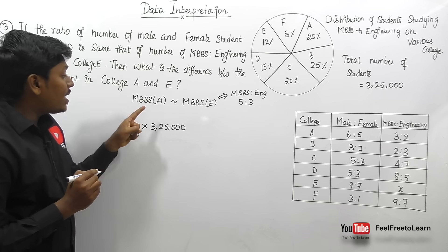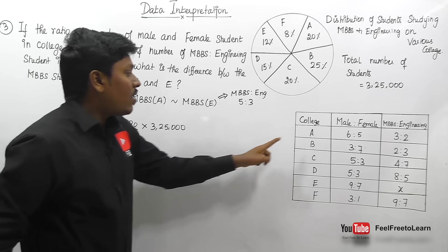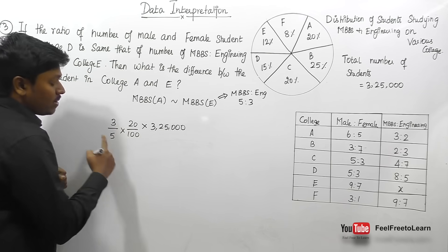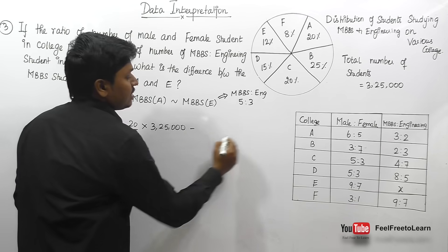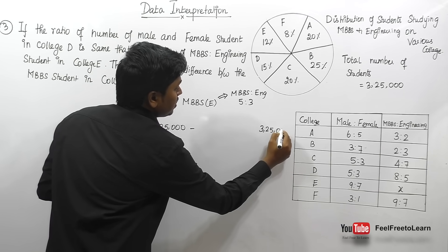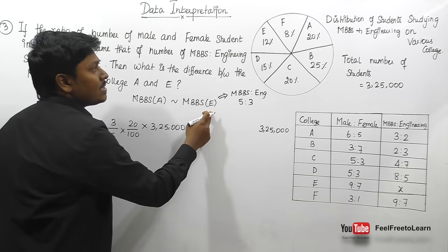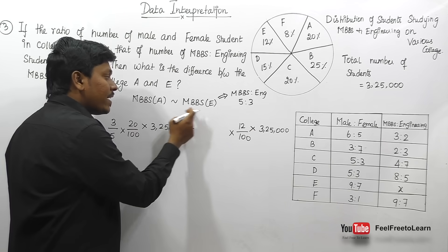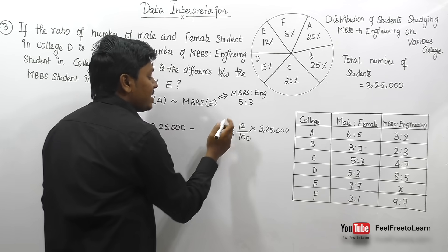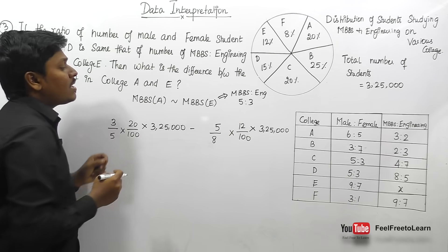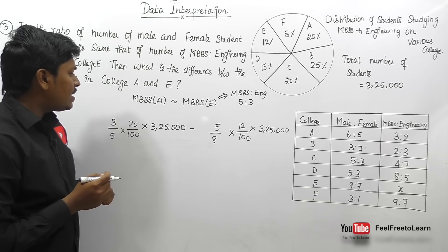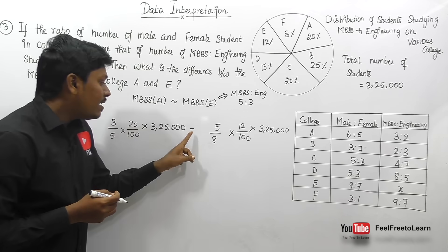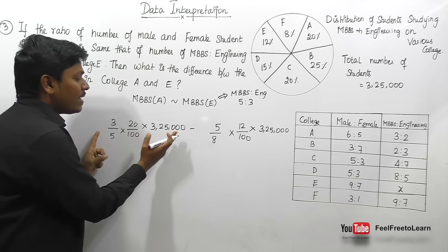College A has 20% of 3,25,000 students. MBBS ratio in college A is 3 out of (3+2) = 5. College E has 12% of 3,25,000 students. MBBS ratio in college E is 5 out of (5+3) = 8. We need to subtract these two values.